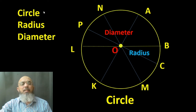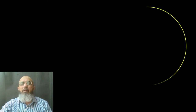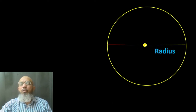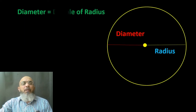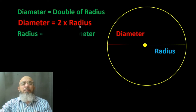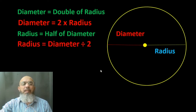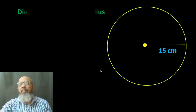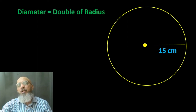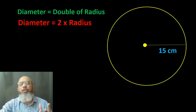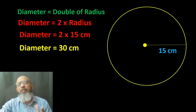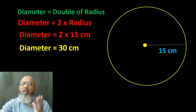All lines passing through the center are called diameter, and diameter is double the radius. So till now you have learned about radius, circle, and diameter. The whole line is the diameter; double the radius is diameter. If we multiply the radius by two we get the diameter. For example, if the radius is 15 centimeters and we want the diameter, we multiply 15 by 2 to get 30 centimeters.